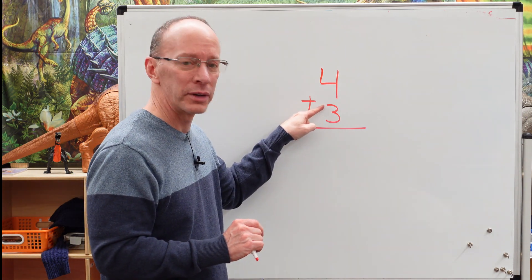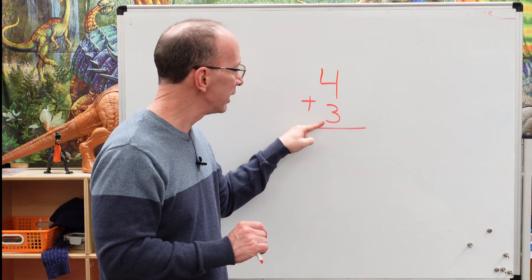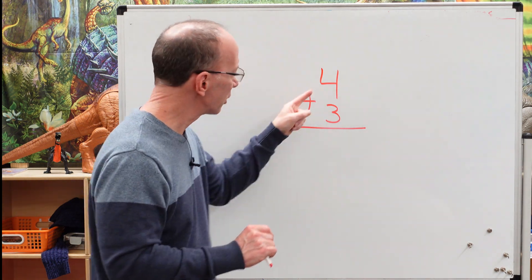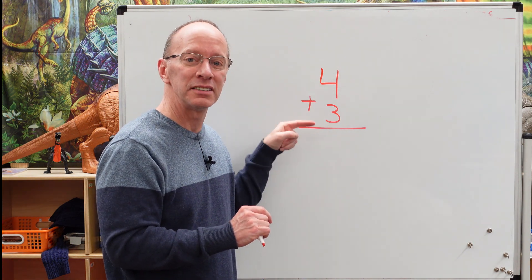You could always take this little part of the three. See, there's a part here, one, and another one, two, and another one, three. So let's start with the biggest number first, four, and then five, six, seven.